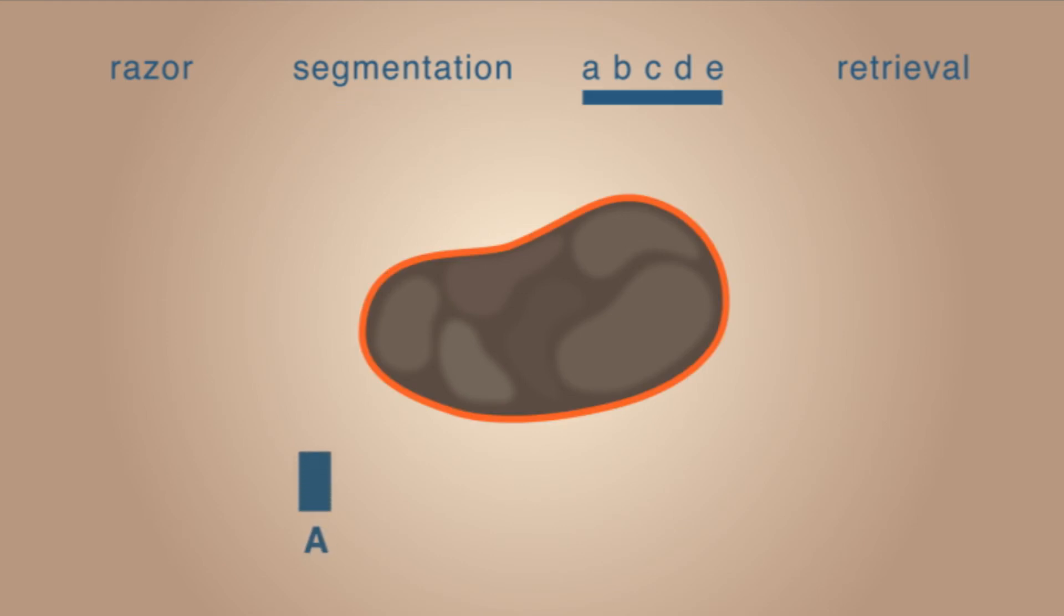Once the image has been segmented, important numerical information about the skin lesion can be displayed, such as the prevailing colors, the asymmetry parameters, the form factor, the circularity and many others, providing an objective complete ABCDE analysis.